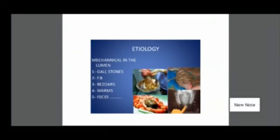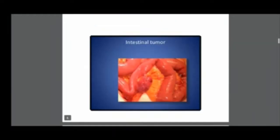Diagrammatically, in the intestinal lumen, a large gallstone can cause obstruction. Foreign body obstructions and excess worm infestation lodged in the intestinal lumen can also cause obstruction. Feces, or fecoliths — stone-like fecal matter — if accumulated, can definitely cause obstruction as well.